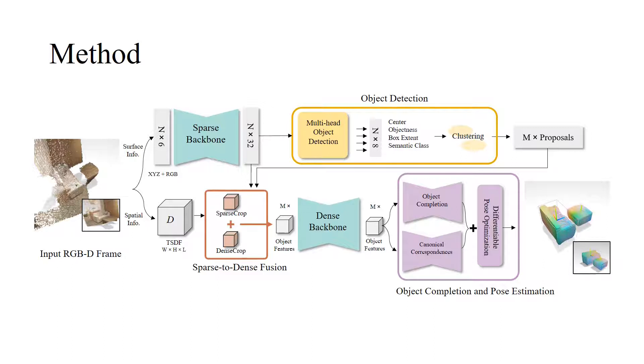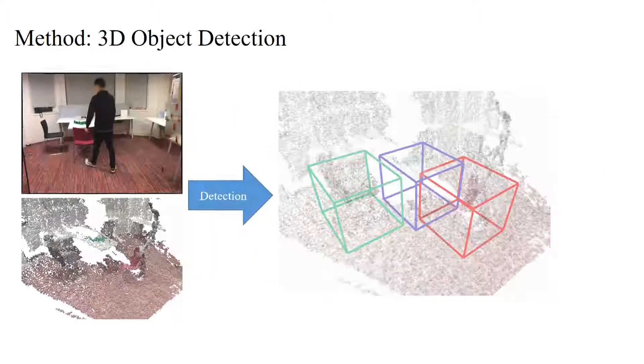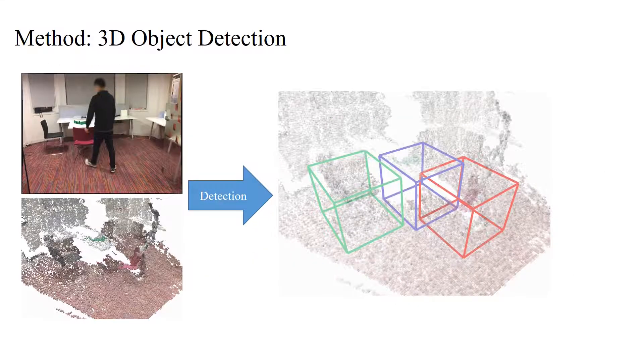A differentiable SVD then provides per-frame pose estimates for all detected objects. For object detection, we detect objects as axis-aligned bounding boxes by regressing object centers and clustering with mean shift.